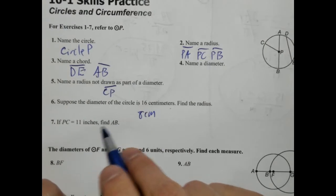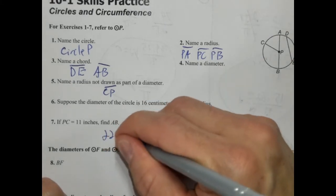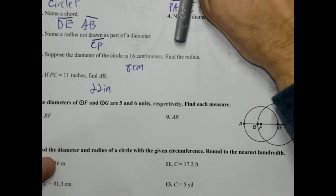If PC is 11 inches, find AB. So PC is the radius, it's 11. AB is the diameter, so it's going to be double 11, which would be 22 inches. Okay. Oh, look at this problem. This is interesting.